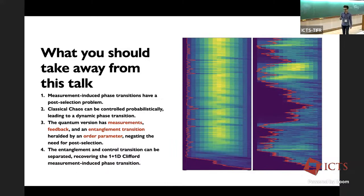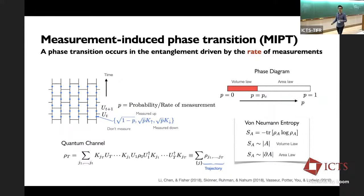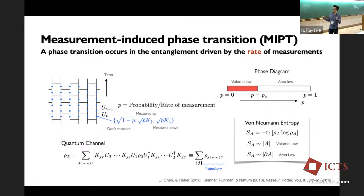As a brief overview of the measurement-induced phase transition: this is a phase transition that occurs with the rate of measurements in a system. In the usual brickwork pattern, the lines are all qubits, the horizontal lines are unitary gates — completely random, or random with some distribution — and the blue dots are where we insert Kraus operators, which can either be the identity (don't do anything) or a measurement giving an up or a down result.